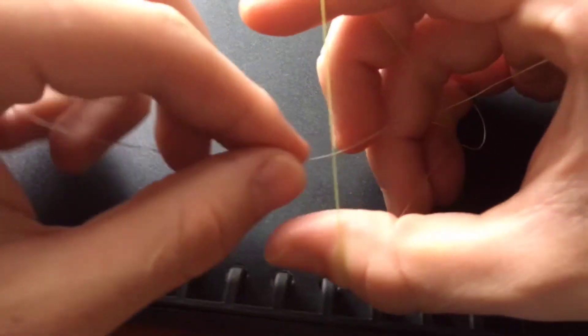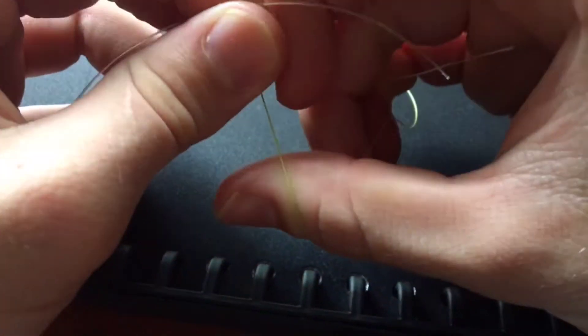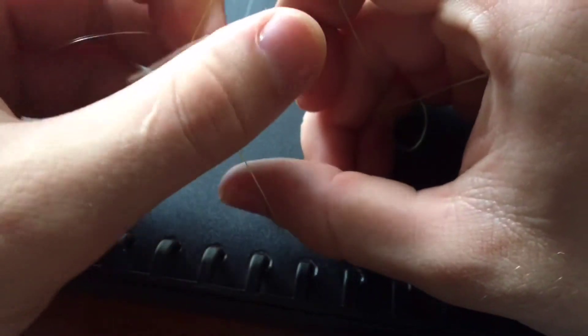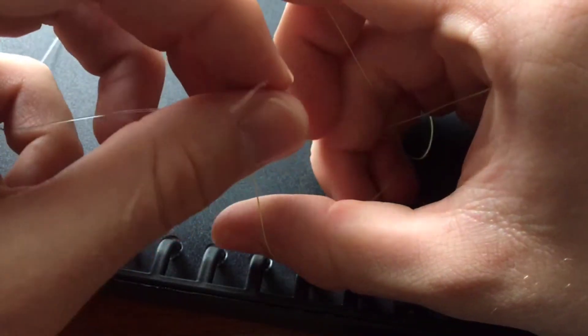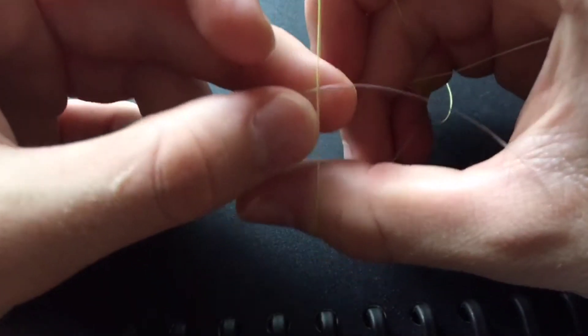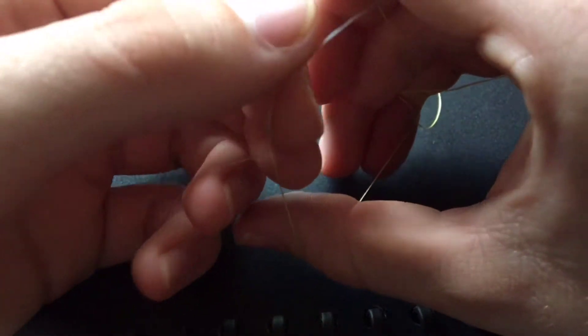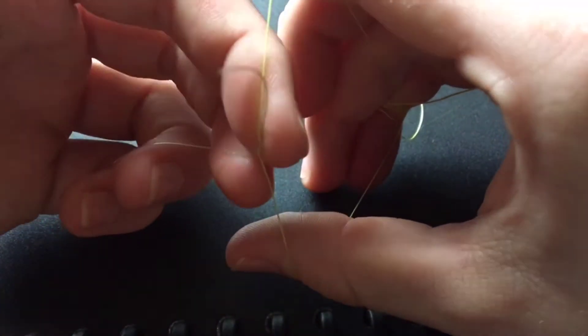Then get your mono and put it underneath here. You want to twist it and run the line back through. An easy way to do it is once you've got it under here, just wrap it around. It makes it so much easier.